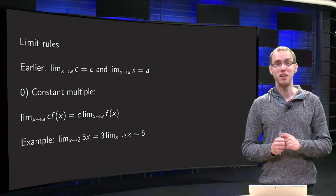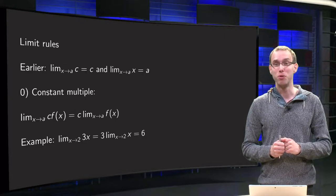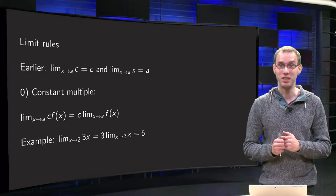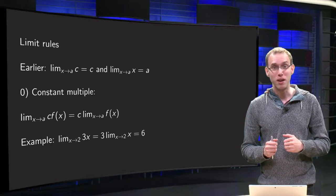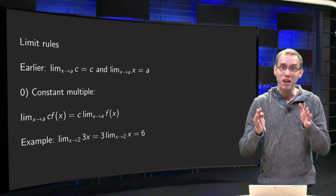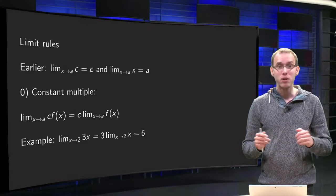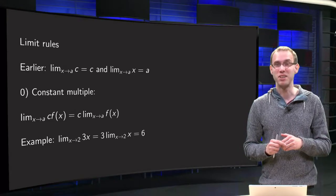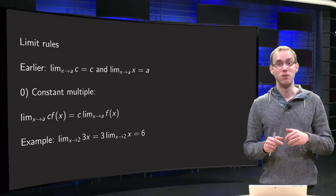Computing limits using the definition is hard. Fortunately, we have a number of rules which make our task a lot easier. These limit rules allow us to compute a lot of limits using only two very basic limits. Whenever possible, you can try to apply these rules instead of giving a difficult epsilon-delta argument. So these rules will make our lives a lot easier.